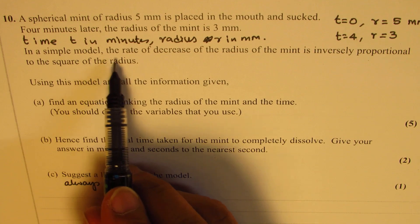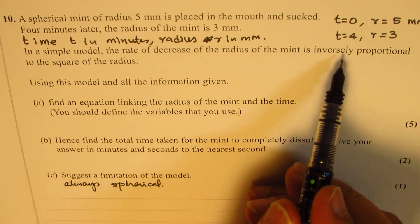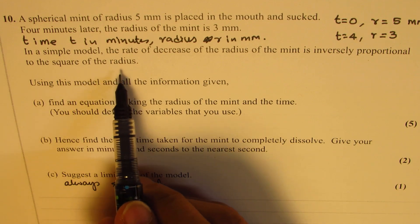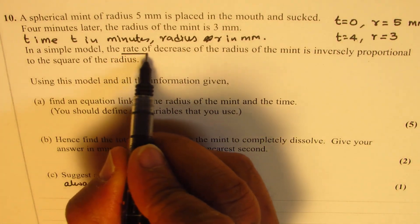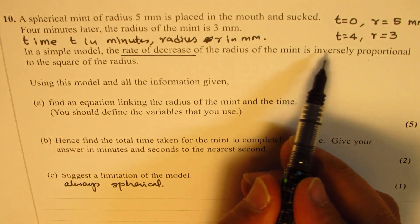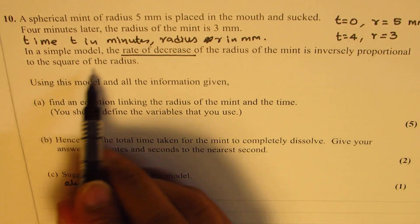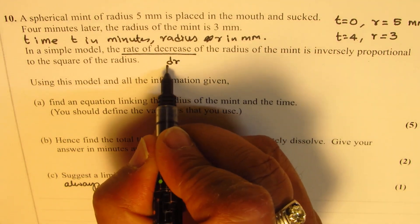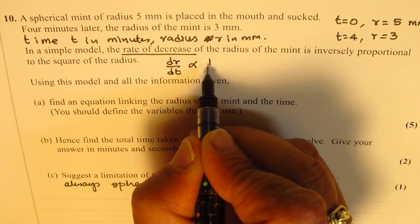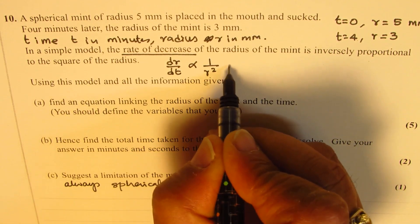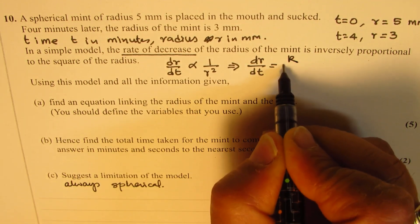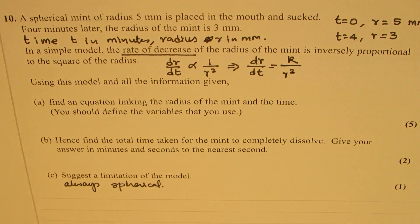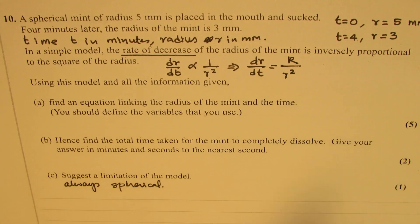In a simple model, the rate of decrease of the radius of the mint is inversely proportional to the square of the radius. So, rate of decrease means dr/dt is inversely proportional to the square of the radius. That means dr/dt is proportional to 1 over r squared, and that gives you dr/dt equals some constant k over r squared.